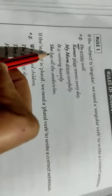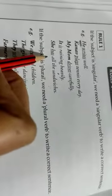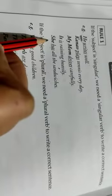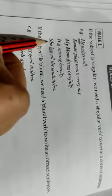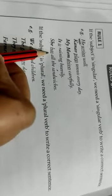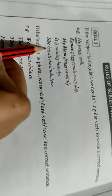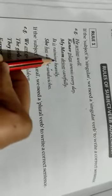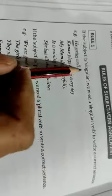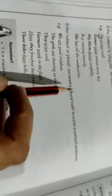Let's take another example: 'She has all these sandwiches.' Here, let's mark the subject — 'she' is the subject, and 'she' is a singular subject. That's why we have used 'has,' which is used for a singular subject. 'Has' is a singular verb. I hope this first rule is clear to you — if the subject is singular, the verb will also be singular.